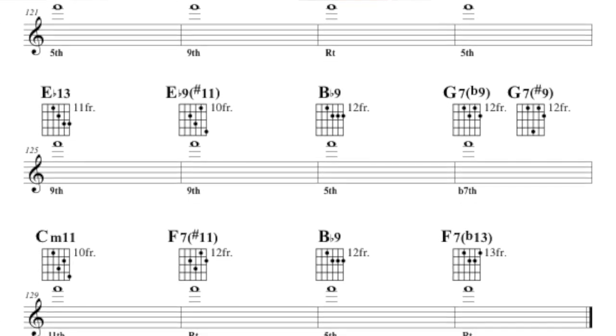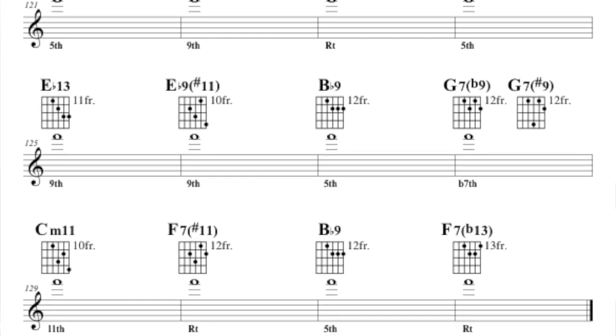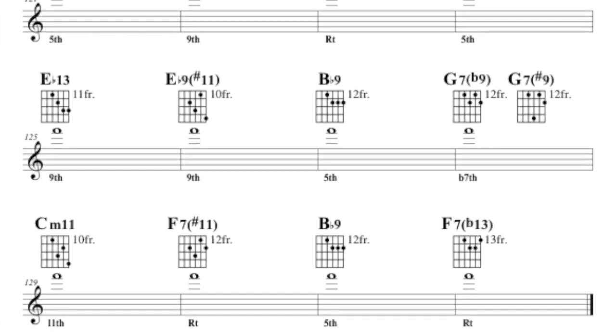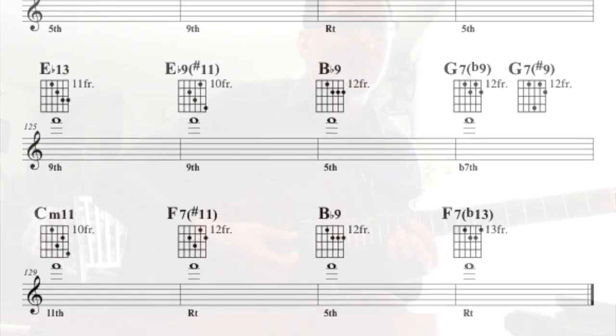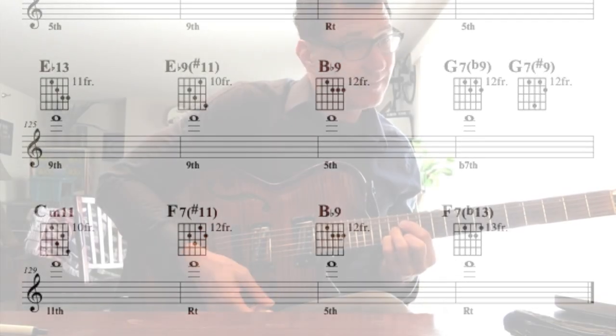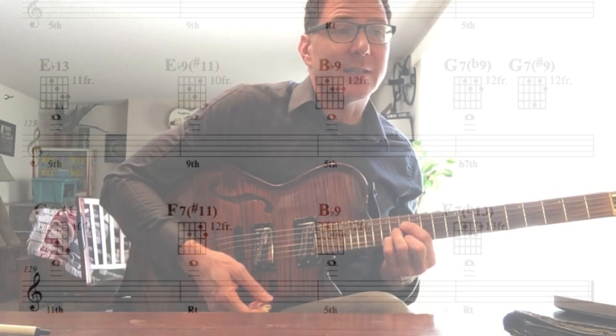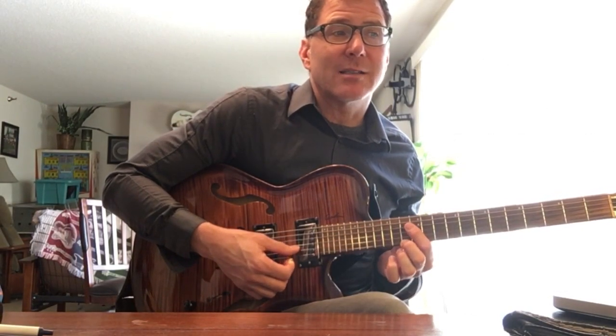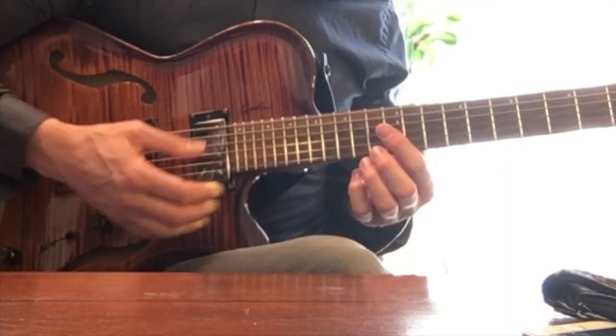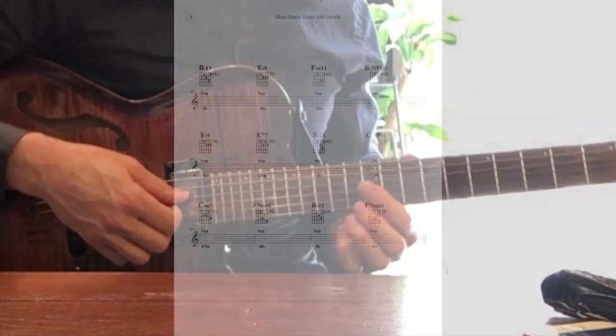And then here's an F-seven sharp eleven with the F on top. Listen to the inner voice leading of that last 2-5-1 in a blues, continuing up in the inner voices. So I'm having voice leading going on underneath a pedal tone on top. So let's try all of those things. Four choruses in a row with bass line.